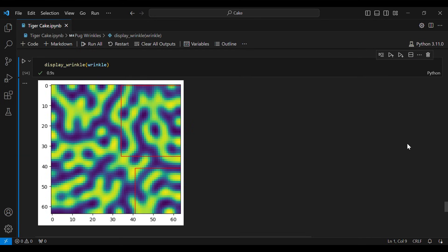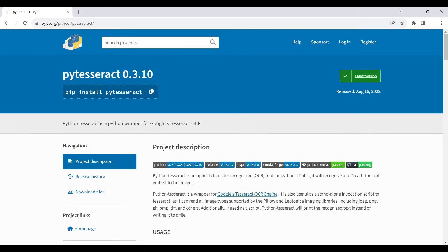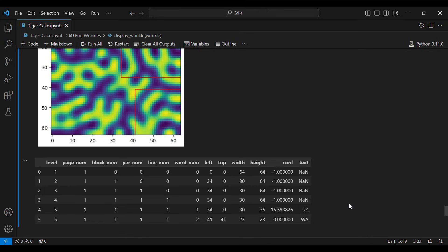To find text in the wrinkles, I used a character recognition tool called Tesseract. It works with a lot of languages, and it gives the confidence for its predictions so we can use it to decide which pugs to breed.